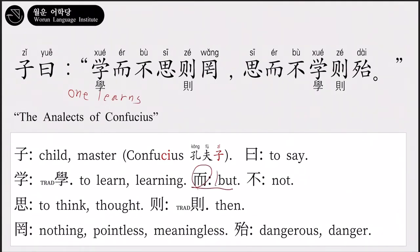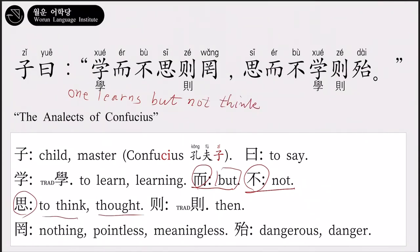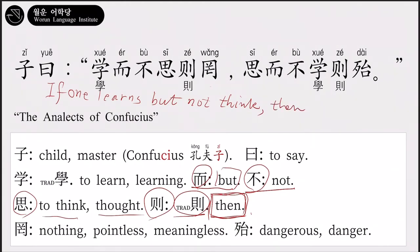而 is a conjunction meaning 'but.' So: one learns, but. 不 is a negative adverb meaning 'not.' 思 means 'to think' or 'thought.' So: one learns but does not think. 则 is the particle introducing the main clause of a conditional sentence, making it conditional: if one learns but does not think, then — 罔 — nothing, pointless, or meaningless. He will have gained nothing.